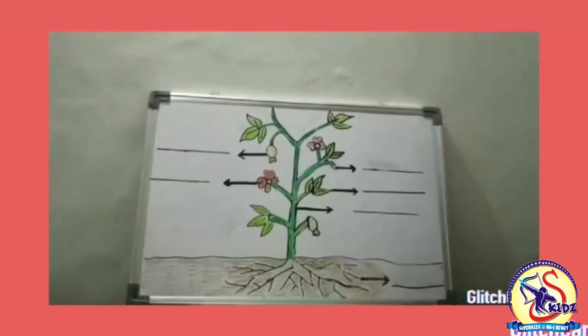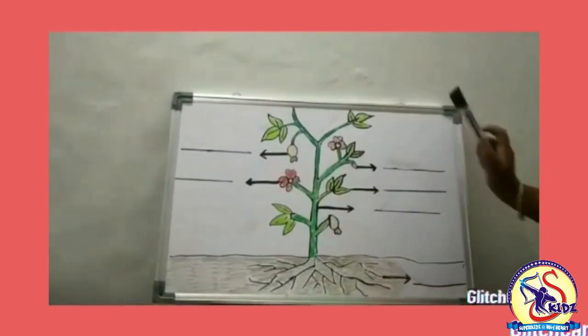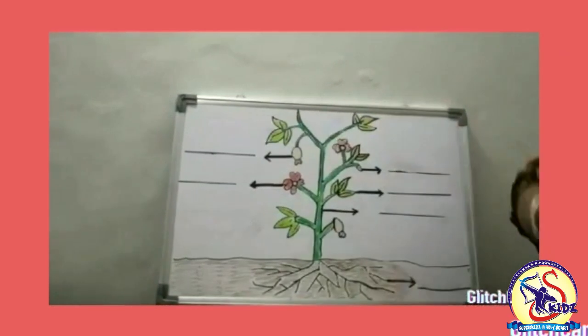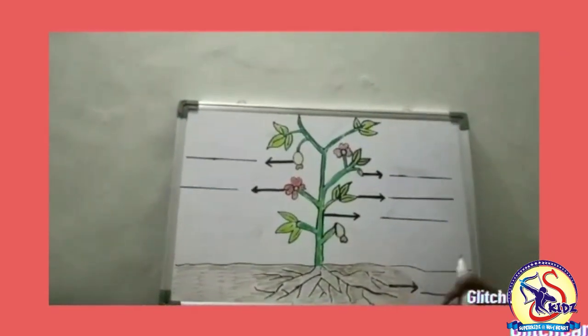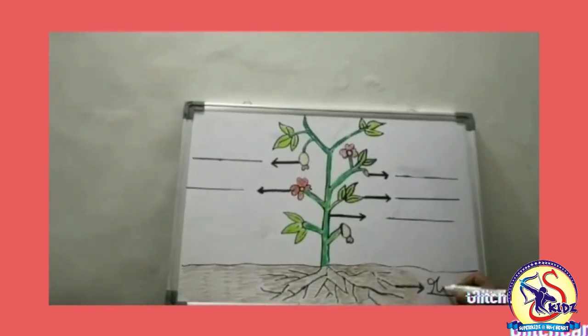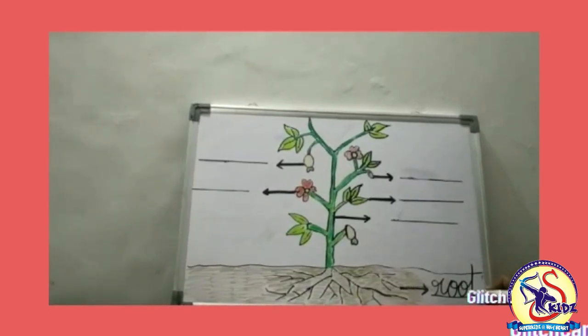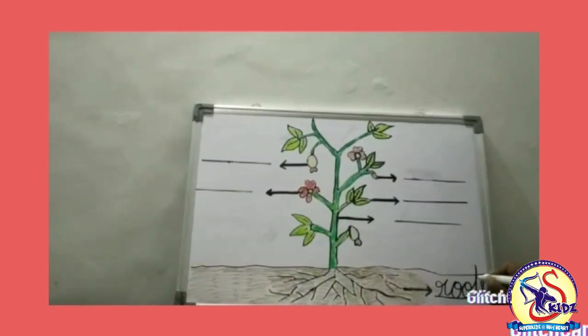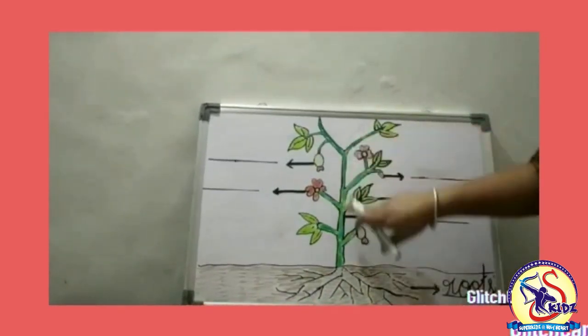Now kids, we will do an easy and interesting activity. Here is a plant given and we have to label the parts of a plant. The first part is roots. Which part is this? Roots, spelled R-O-O-T-S. Roots are the main part of a plant which holds the stem.